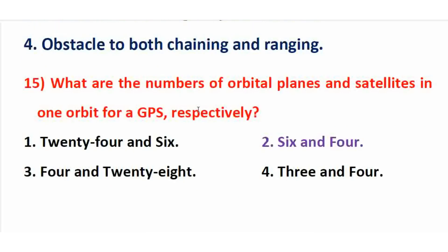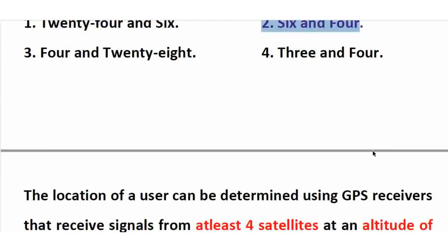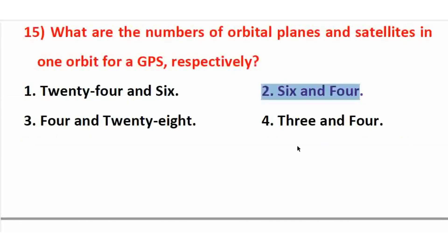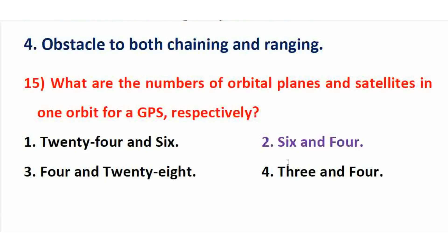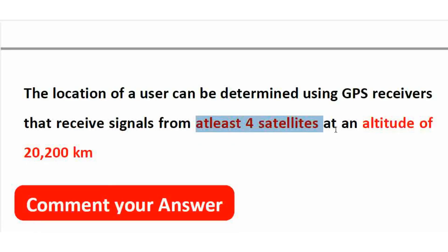What are the number of orbital planes and satellites in one orbit for GPS? GPS means Global Positioning System. In GPS, the number of orbital planes is 6, and the number of satellites per orbit is 4. A minimum of 3 satellites is needed for 2D positioning and a minimum of 4 satellites is required for 3D positioning. The location of the user can be determined using a GPS receiver that receives signals from at least four satellites at an altitude of approximately 20,200 km.